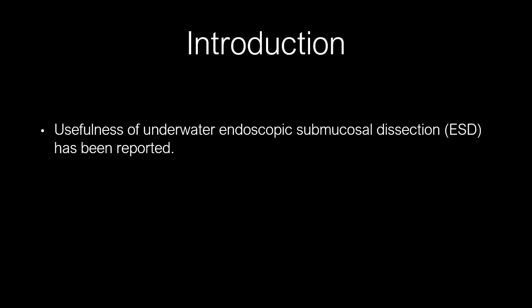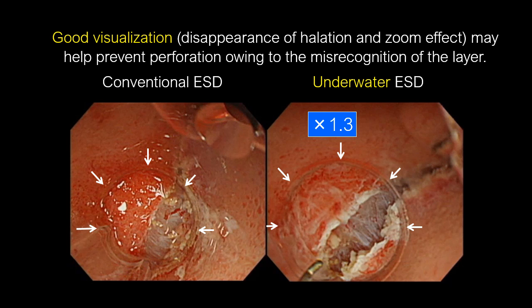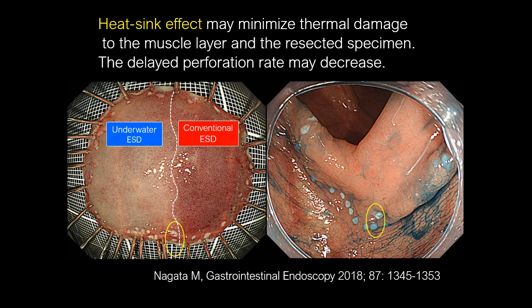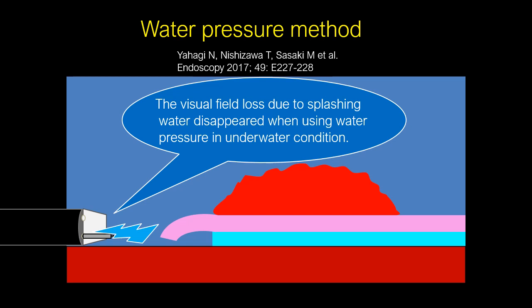The usefulness of underwater endoscopic submucosal dissection has been reported. The benefits of underwater ESD include good visualization, buoyancy, heat-sink effect, and allowing easy application of water pressure and elongation of reach. Good visualization may help prevent perforation owing to misrecognition of the layer. Buoyancy enables opening of the mucosal flap against gravity, enabling easier approach to the submucosal layer. The heat-sink effect may minimize thermal damage to the muscle layer and the resected specimen, and the delayed perforation rate may decrease.